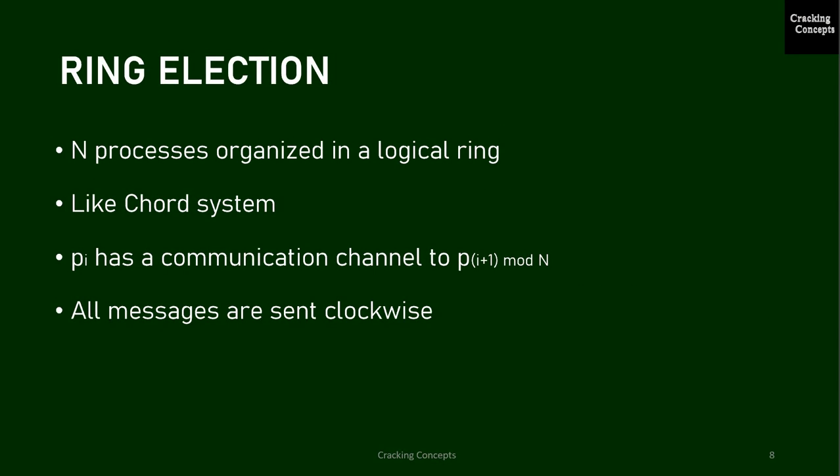Now let us look at the classical ring election algorithm, where N processes are organized in a logical ring. This arrangement is similar to a Chord system — a protocol and algorithm for a peer-to-peer distributed hash table. Each process PI has a communication channel connected to process P of (I+1) mod N, and all messages are sent clockwise. This algorithm is also known as the Chang and Roberts algorithm. We assume no failures occur and that the system is asynchronous. The goal is to elect a single process called the coordinator, which is the process with the largest identifier.